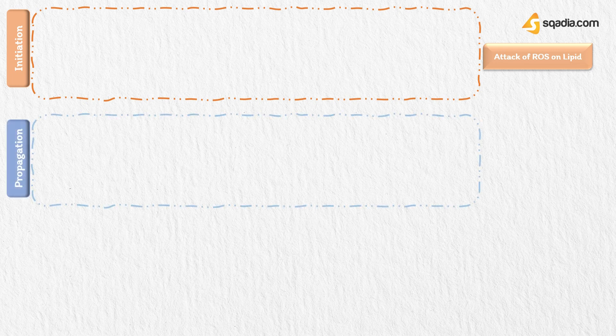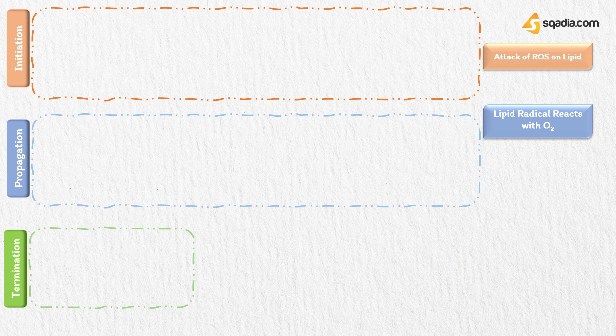In propagation, lipid radical reacts with oxygen. In the third and last step, called termination, two radical species react.